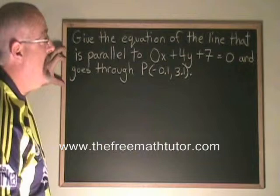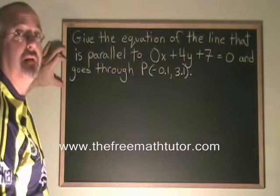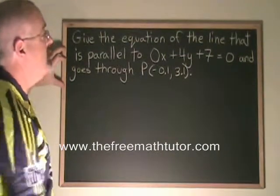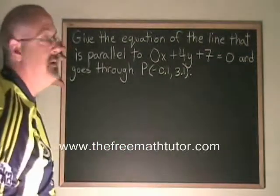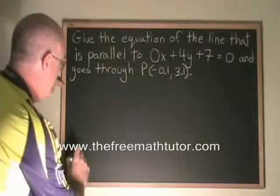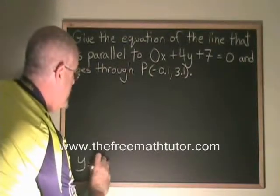Any line that is parallel to a horizontal line must also be a horizontal line. And the only horizontal line that goes through this point would have to have the equation y equals 3.1. So the answer will be y equals 3.1.